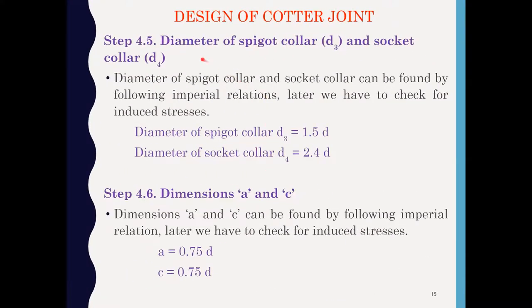Step 4.5: Diameter of the spigot collar D3 and socket collar D4. For these we use empirical formulas: diameter of spigot collar D3 = 1.5 × D, and diameter of socket collar D4 = 2.4 × D.